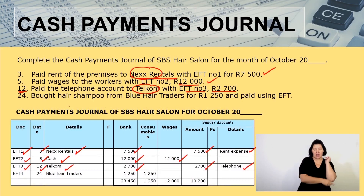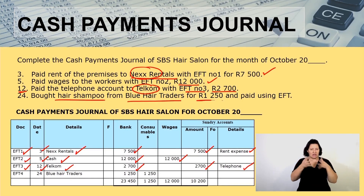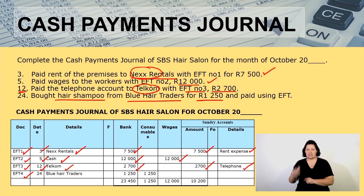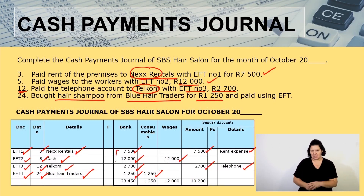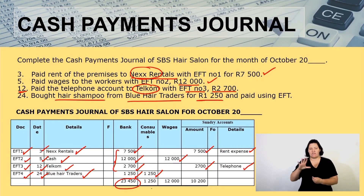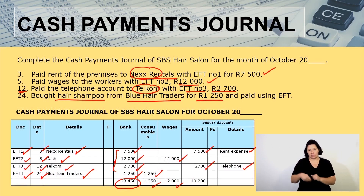The last transaction: bought hair shampoo from Blue Hair Traders for 1,250, using EFT four, date is the 24th. We paid Blue Hair Traders 1,250 — this is for consumables. Adding everything up, we get 23,450 in bank, 1,250 in consumables, 12,000 in wages, and 10,200 in sundry accounts.